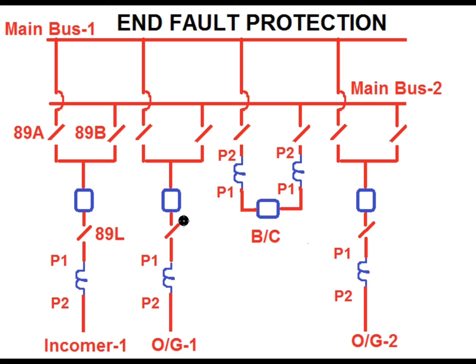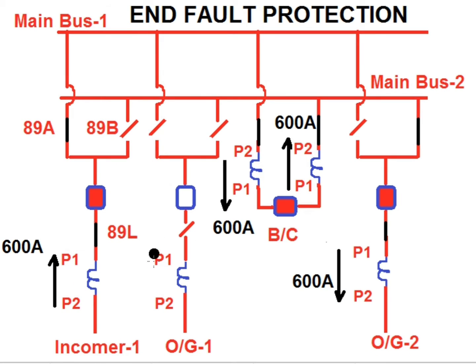In this video I will discuss how the end fault or dead zone fault is detected by the bus bar relay. Consider that outgoing feeder 1 is under shutdown condition. Under this condition, 89A, 89B, and 89L of this outgoing feeder are open and the breaker is in off condition. Incomer 1 is supplying power to outgoing feeder 2 via the bus coupler bay.